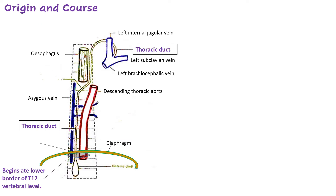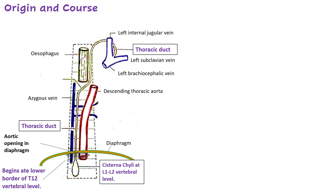The thoracic duct begins in the abdomen at the upper end of a dilated lymph sac known as the cisterna chyli, at the vertebral level of T12. It then passes through the aortic opening in the diaphragm alongside two other structures: the azygos vein on its right and the descending aorta on its left. All three pass through the aortic opening into the thoracic cavity, where the thoracic duct runs in the posterior mediastinum between these two structures.